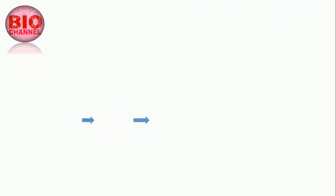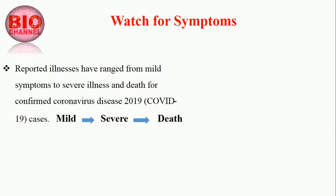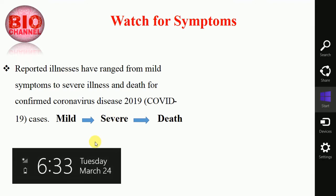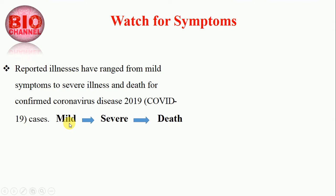The symptoms in patients with coronavirus range from mild symptoms to severe illness and death for confirmed COVID-19 cases. In reports, you will see three types of terminology: mild symptoms, severe symptoms, and death. Mild means the patient can recover easily. Severe means recovery is possible but requires extreme effort. A patient in a death state means the patient has expired.